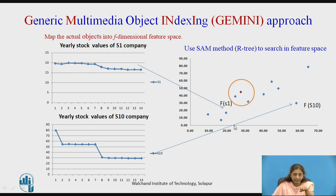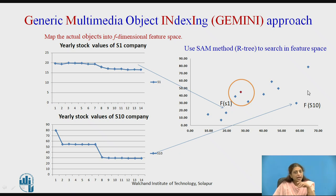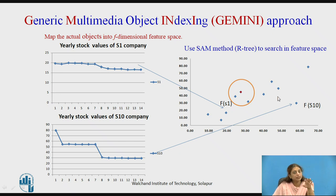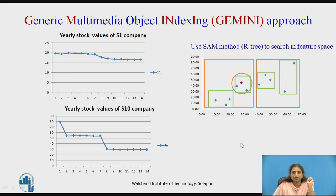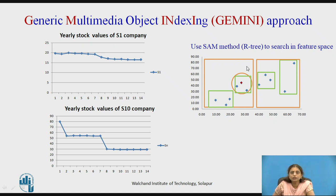Once stored in the R-tree using the spatial access method, the points are organized using minimum bounding rectangles. With two features the space is two-dimensional; with three features it becomes three-dimensional, and so on for n features. The R-tree has a root node with two child nodes, each representing a rectangle, which in turn may contain further rectangles depending on the fan-in and fan-out settings.